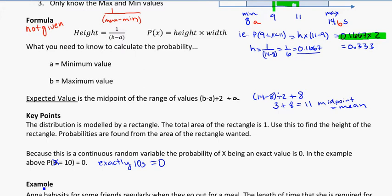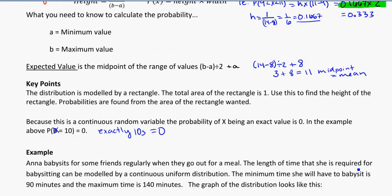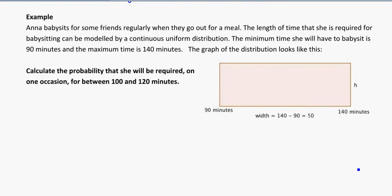So let's take a look at one more example, and I'll walk it through right from the top so you can see the process on these. Anna babysits for some friends regularly when they go out for a meal. The length of time that she is required for babysitting can be modeled by a continuous uniform distribution. So here they're telling us exactly that we can use the uniform. The minimum time she will have to babysit is 90 minutes, and the maximum time is 140.